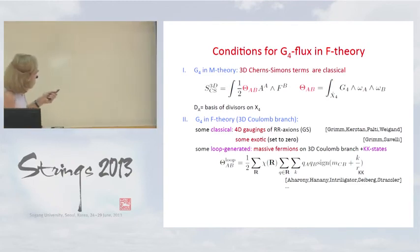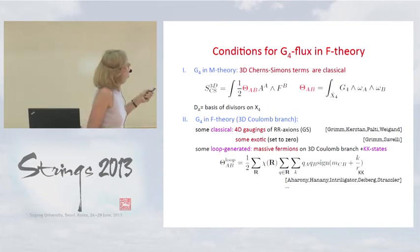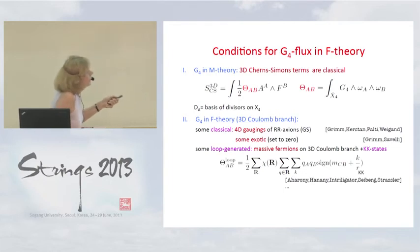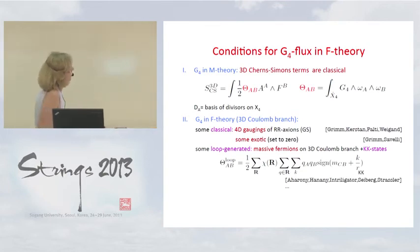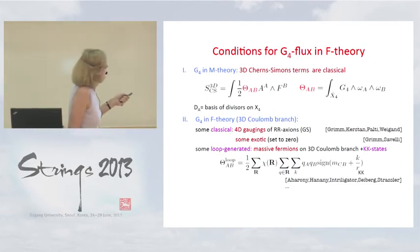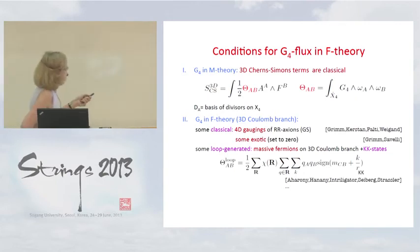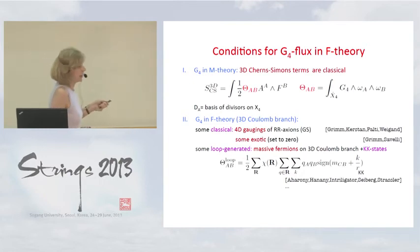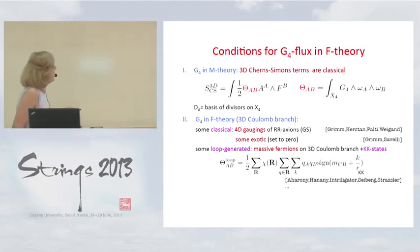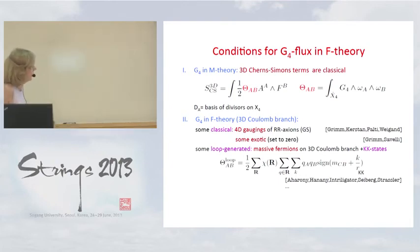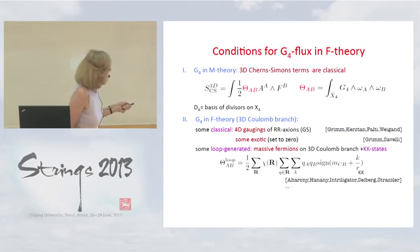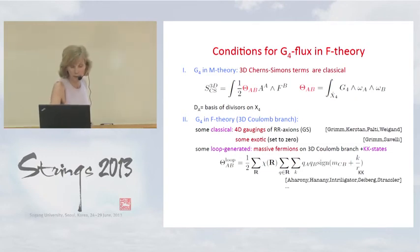The core thing in this analysis is that in three dimensions, when we work with 11-dimensional supergravity, we encounter three-dimensional Chern-Simons terms, which are classically determined in terms of theta parameters from integrating G4 fourfold flux over corresponding wedge products of (1,1)-forms on the resolved fourfold. From the F-theory perspective, these Chern-Simons terms have different origins — some are classical, corresponding to gauging of Ramond-Ramond axions in four dimensions and the generalized Green-Schwarz mechanism; some appear at one loop, due to integration over massive fermions in the Coulomb phase. This one-loop Chern-Simons term is proportional to the chirality of matter representations.